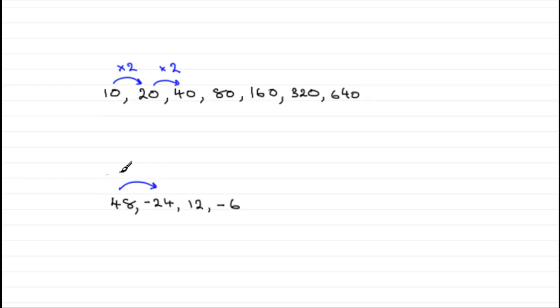48 times minus a half is going to give me that minus 24 and if I multiply minus 24 by minus half you get 12 and so on. So the next term in the sequence will be 3 and the one after will be minus 1 and a half and so on.